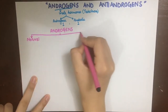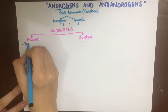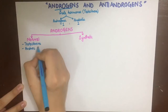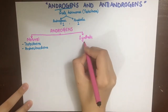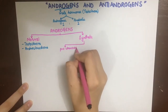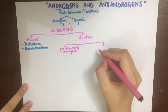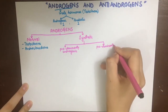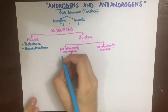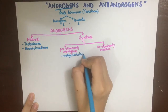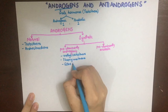We have different androgens: the naturally occurring ones and the synthetic ones. The naturally occurring androgens are testosterone, androstenedione, dihydrotestosterone, and dehydroepiandrosterone. The synthetic androgens are further classified into those with predominantly androgenic actions with low anabolic activity, and those with predominantly anabolic actions with decreased androgenic activity. The synthetic androgens with predominantly androgenic action are methyltestosterone, fluoxymesterone, and esters of testosterone.